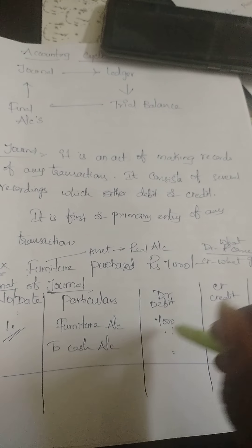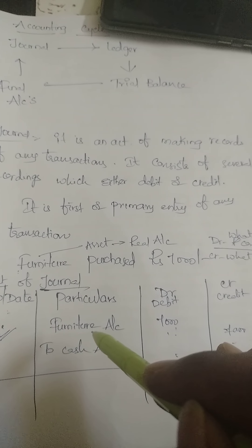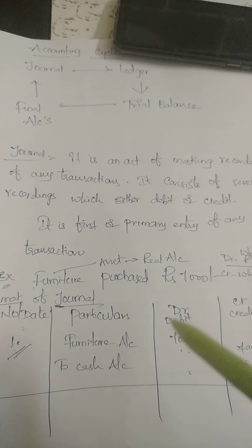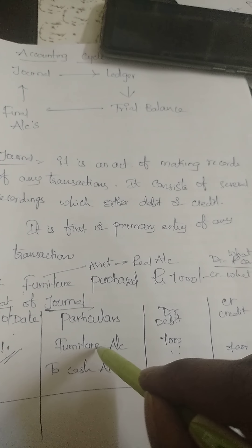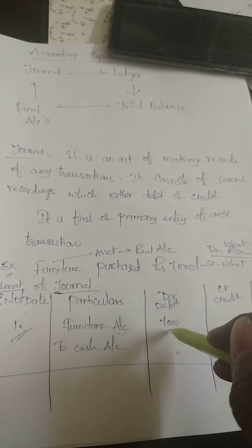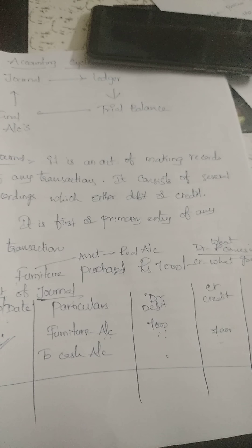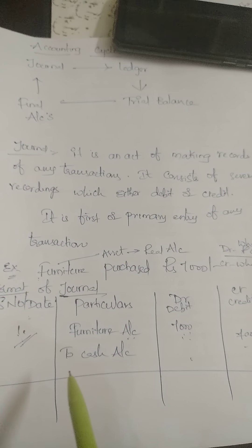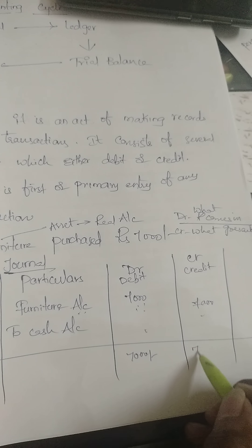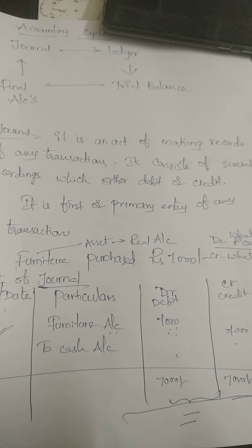For every transaction posted in the journal, ledger, or trial balance, we must write 'account.' Furniture purchased means furniture comes in, so receiver information is written first: Furniture Account 7,000 rupees. What goes out — we are giving cash — so 'To Cash Account' 7,000 rupees. At the end of all transactions posted in the journal, we write the totals. This is called tallying or balancing the debit and credit amounts.